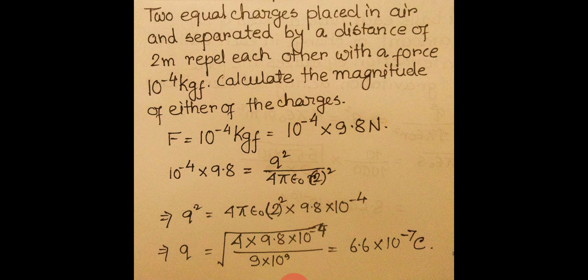Both charges are equal in magnitude. Their nature is not specified, so the magnitude is 6.6 × 10^-7 C. If the nature is asked, then q = ±6.6 × 10^-7 Coulomb — either both charges are positive or both are negative, because repulsion occurs only when the two charges are of the same nature.